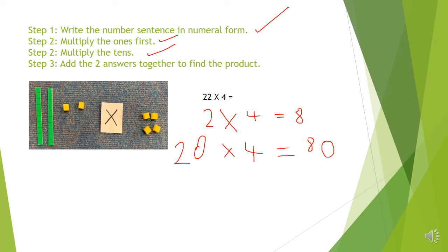And now the last thing to do is add the two answers together to find the product. So I've got 8 plus 80. I'm going to start with a bigger number first, as we usually do, 80 plus 8. You can have 80 in your head and count on 8, which would give you 88.